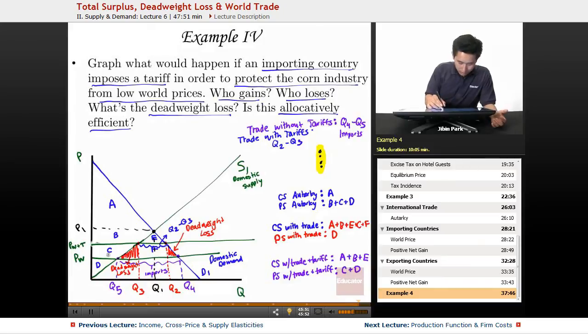So who gains from this? Well, definitely the domestic producers gain because they gain that C area here. Who loses from this? Well, the consumer. They lose out on the C, F, and also the deadweight loss here. Another person who gains from this - the government actually collects this F amount in terms of revenue. And the final question, because we know the deadweight loss is the two triangular areas created from the tariff.